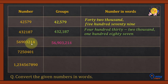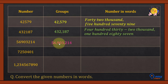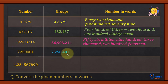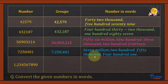Let's see this one. Divide the number into groups of three digits: first three, comma, then next three, comma. So we have the hundreds group, thousands group, and millions group. The answer is: fifty-six million nine hundred three thousand two hundred fourteen. For the next number, divide into groups — hundreds, thousands, millions. The answer is: seven million two hundred fifty thousand four hundred one.